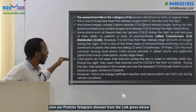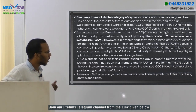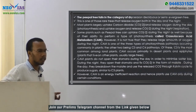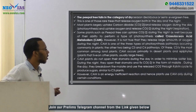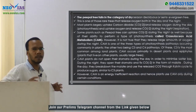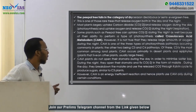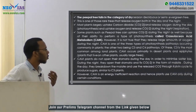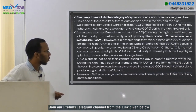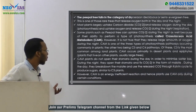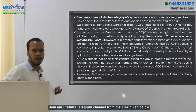CAM plants do not open their stomata during the day in order to minimize water loss. During the night they open their stomata and fix carbon dioxide in the form of malate or malic acid. During the day they break down the malate and use the released CO2 through the Calvin cycle to produce sugars, similar to C3 plants.